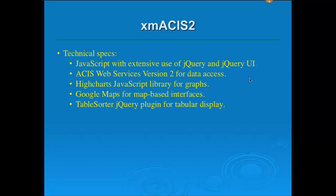For those on the technical side who would like to know what's running under the hood: XMASIS II is written in JavaScript and makes extensive use of the jQuery and jQuery UI libraries. It uses ACES Web Services Version 2 for its data access, and for the display of graphs it uses the HiCharts JavaScript library. We have some map interfaces built into XMASIS II that use Google Maps, and we use a jQuery plug-in called Table Sorter for the tabular display, which gives you a lot of flexibility in playing around with the results.